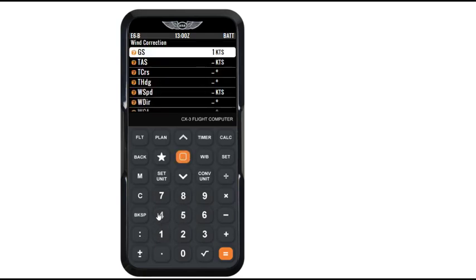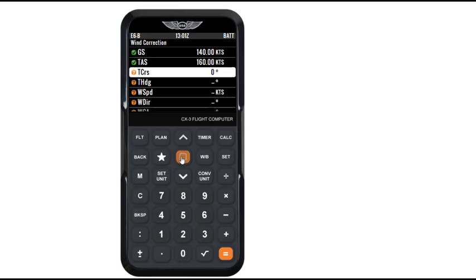Now ground speed we got was 140. Enter that. TAS, enter 160. True course, 082. Heading, true heading, 100. Press enter and we have got wind direction as 158 and wind speed as 50.92.